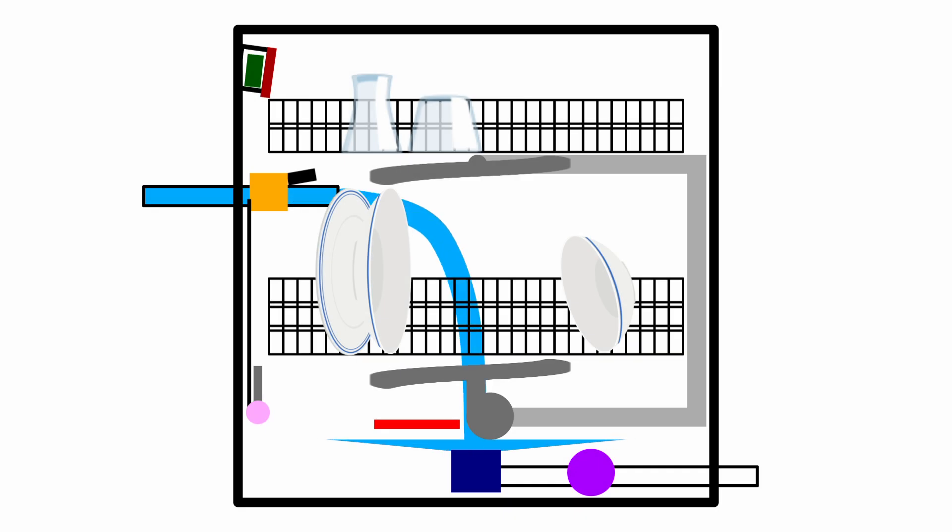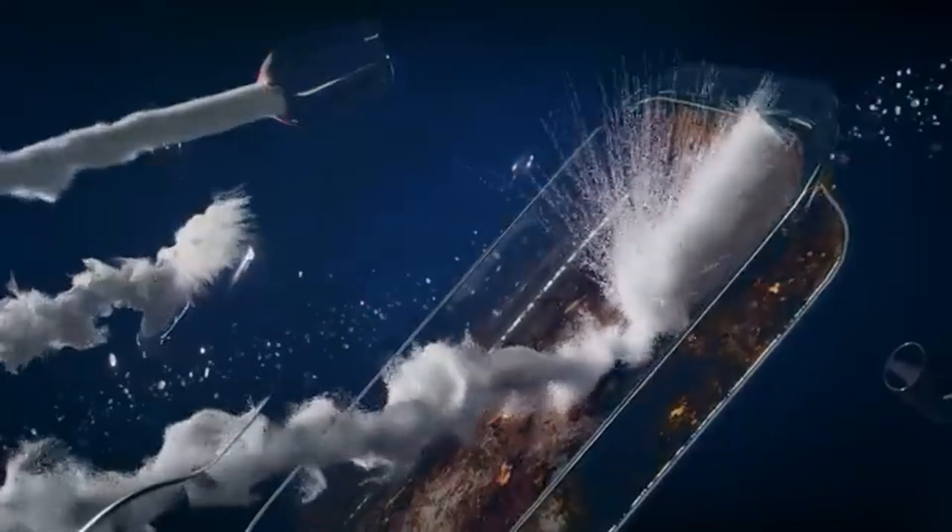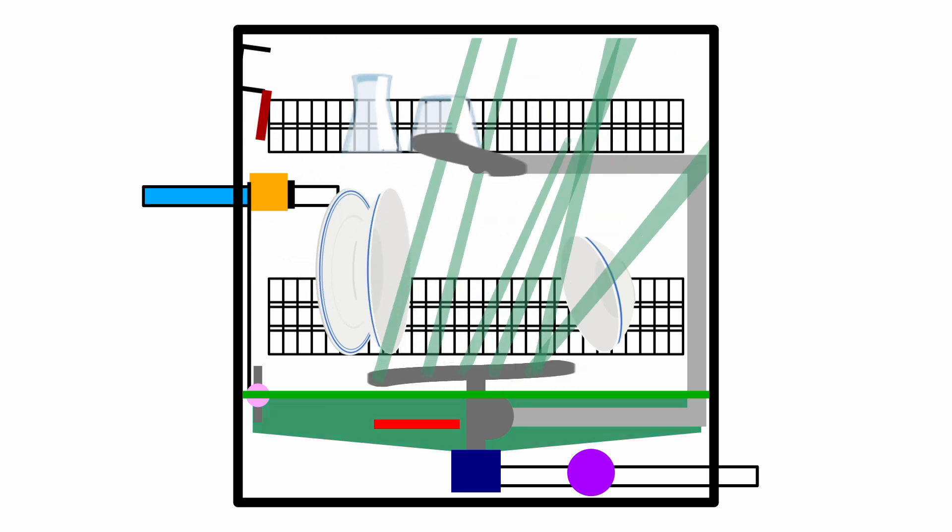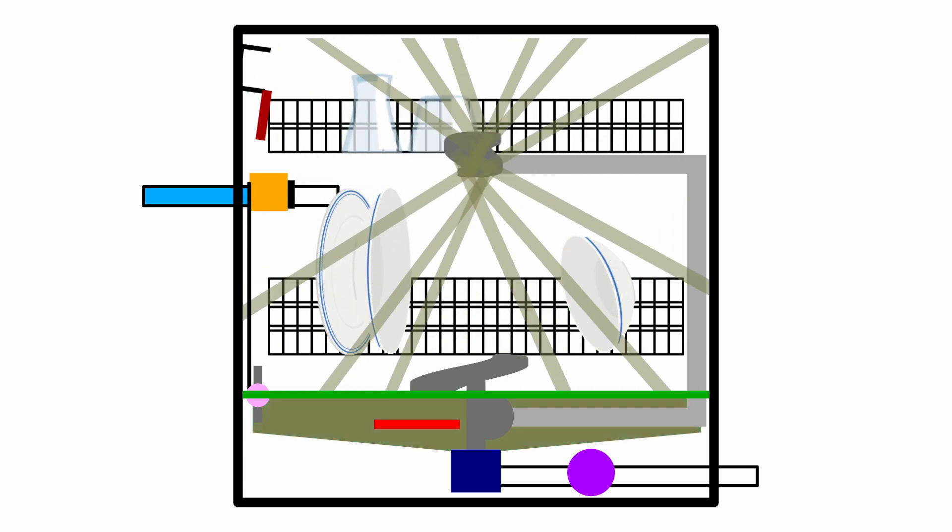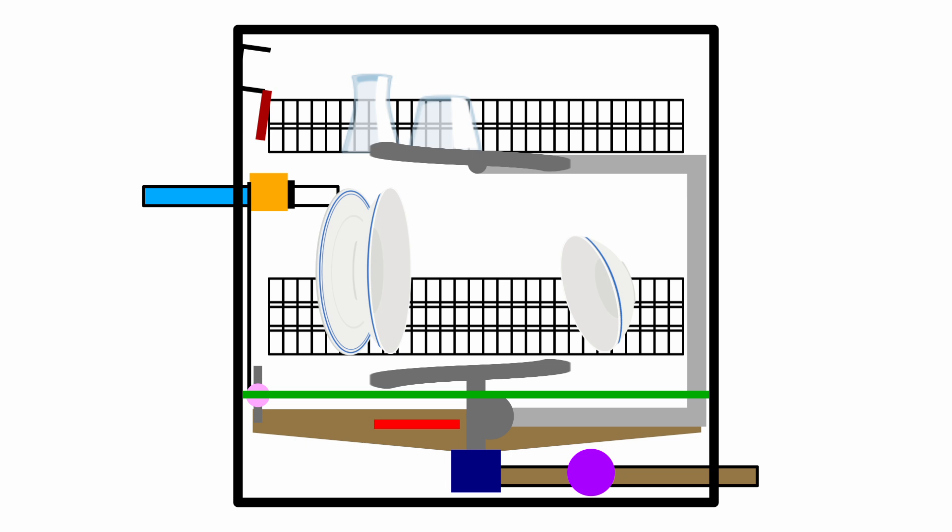To put it simply, dishwashers take in water from the supply line which is then mixed with special detergent designed to remove food deposits. This mixture is heated and then sprayed at high pressures on the crockery to remove the tough baked on stains. The water is then pumped out through the waste pipe carrying all the gunk with it. Now let's look at each of the steps in more detail.